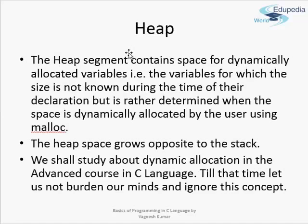After the stack segment comes the heap segment. This is the area where dynamically allocated variables are given memory space. In dynamic allocation, no memory space is reserved at the time of declaration. Instead, memory is allocated later when the user instructs the compiler to do so — this can be done using commands like malloc. The heap grows in the opposite direction to the stack, from lower addresses towards higher addresses.